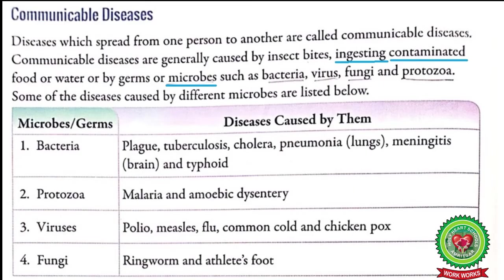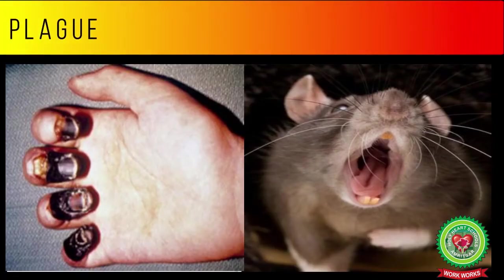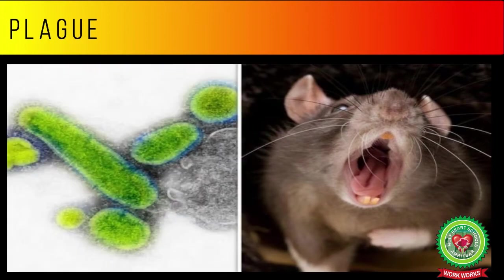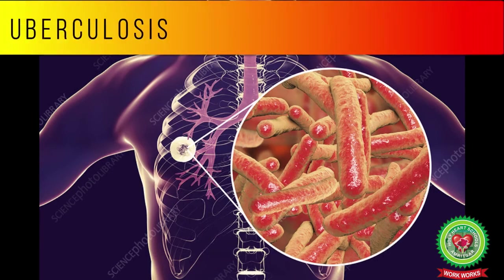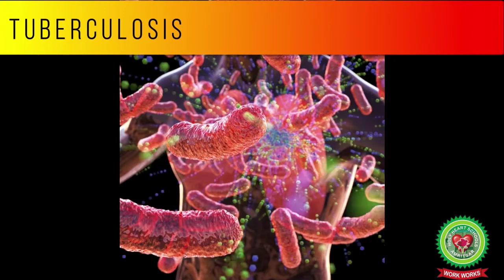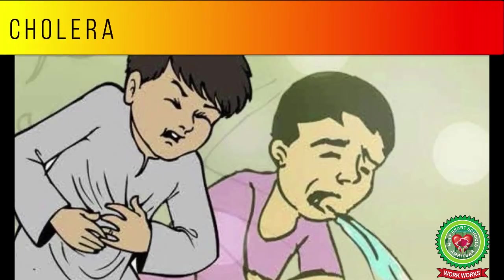Bacteria cause diseases like plague, tuberculosis, cholera, pneumonia, meningitis, and typhoid. Plague is a serious bacterial infection that is transmitted by rat fleas. Tuberculosis is an infectious bacterial disease that mainly affects the lungs. Cholera is a bacterial disease causing severe diarrhea and dehydration.